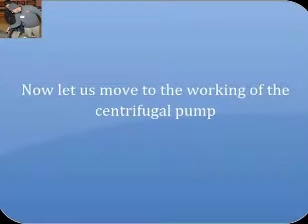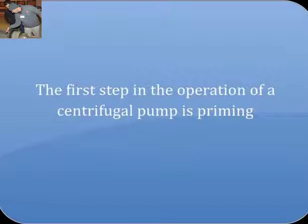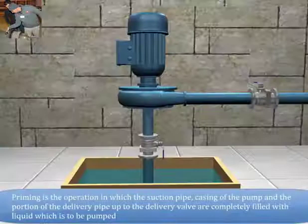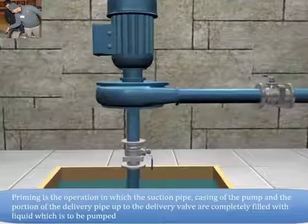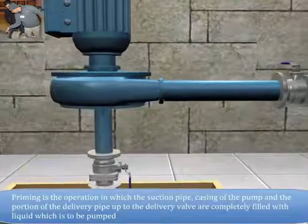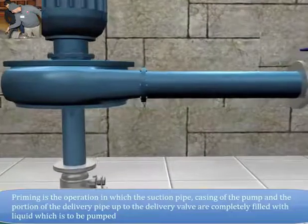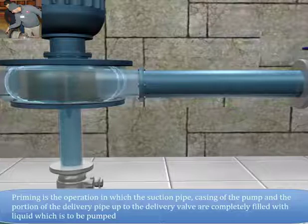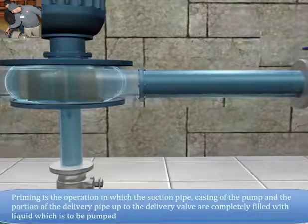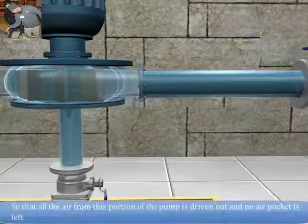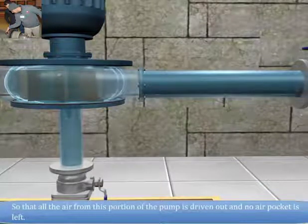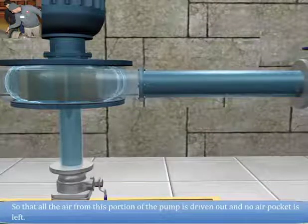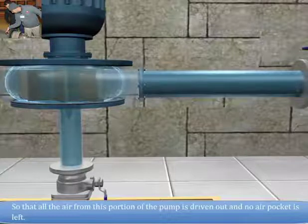Now let us move to the working of the centrifugal pump. The first step in the operation of a centrifugal pump is priming. Priming is the operation in which the suction pipe, casing of the pump and the portion of the delivery pipe up to the delivery valve are completely filled with liquid which is to be pumped, so that all the air from this portion of the pump is driven out and no air pocket is left.